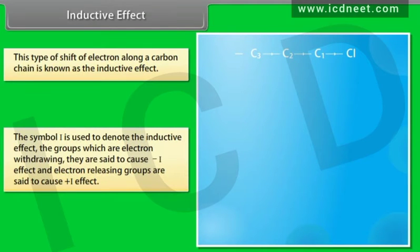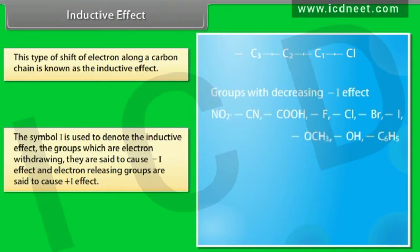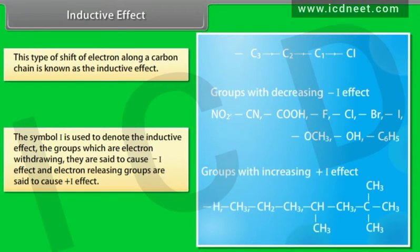This type of shift of electrons along a carbon chain is known as the inductive effect. The symbol I is used to denote it. Groups which are electron-withdrawing are said to cause negative I effect, and electron-releasing groups are said to cause positive I effect.